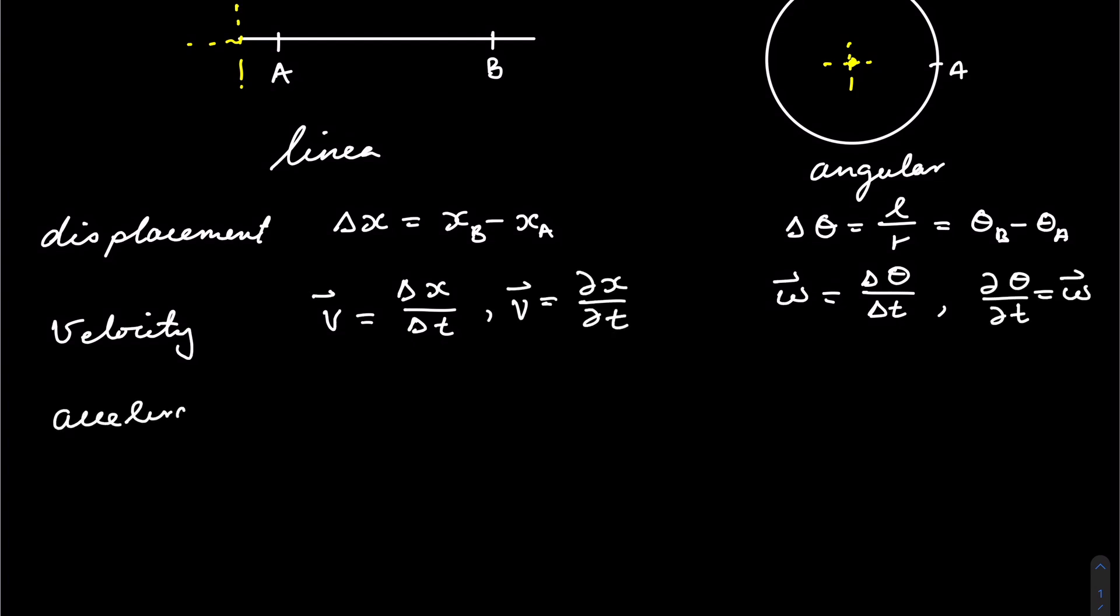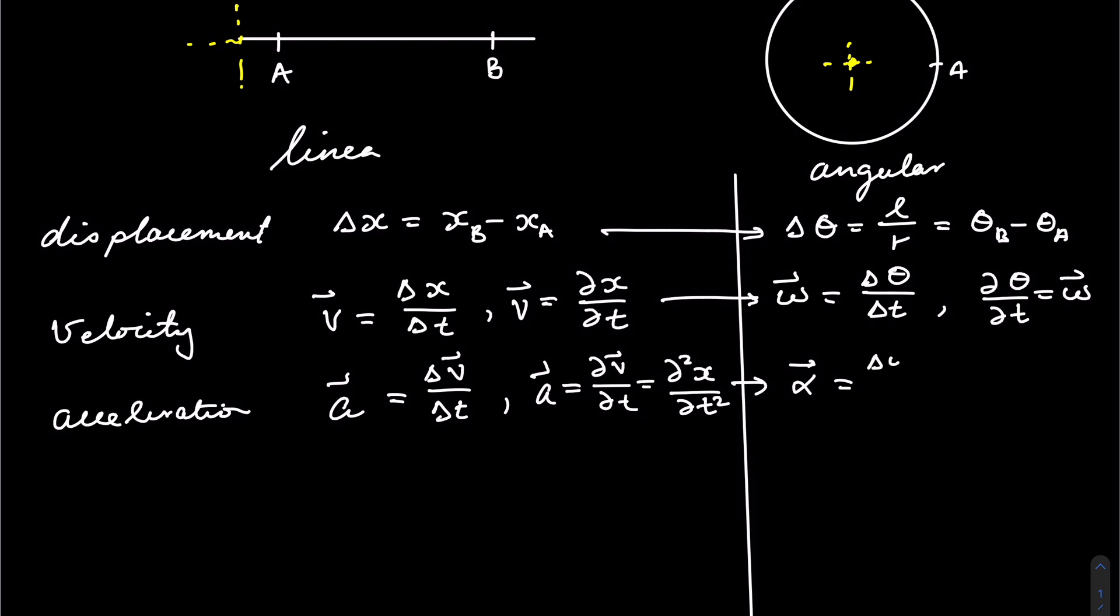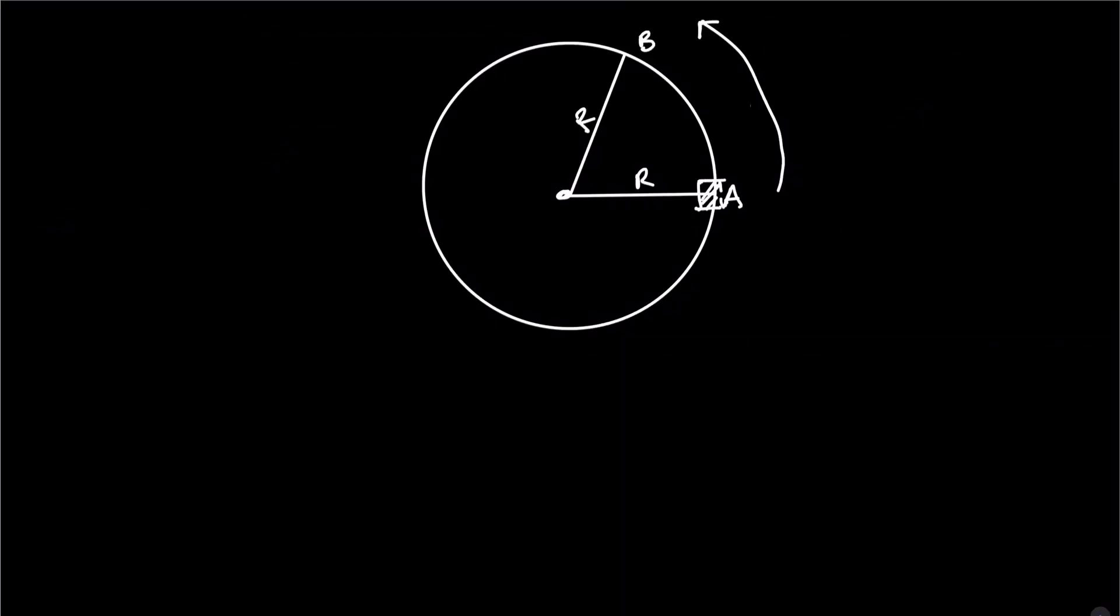Things get a little bit interesting when we get to acceleration. Acceleration for the straight line motion is basically the change in velocity over the change in time. Or similarly, you can say acceleration d squared X over dt squared. Alpha will be given by d omega dt, and that will basically be d squared theta over dt squared. That's your alpha. Let's dive a little bit deeper into the acceleration.